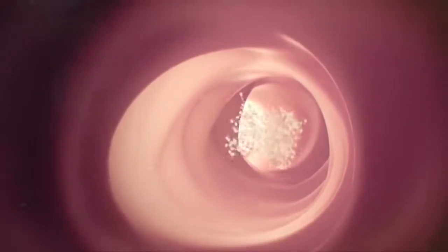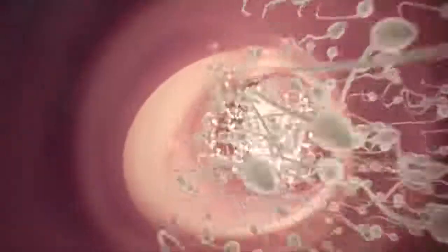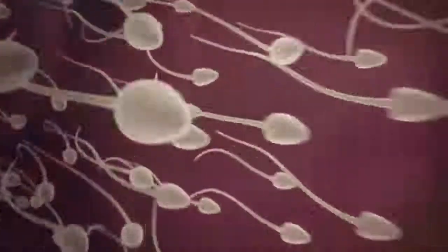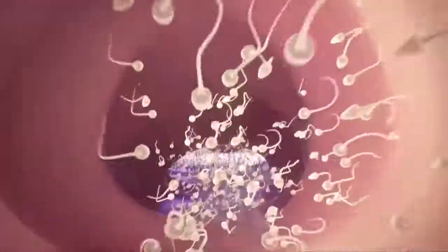Some fall out of the race, getting lost in the rush through the narrow fallopian tubes, while some are stopped by natural obstacles which protect the woman's body from intruders.